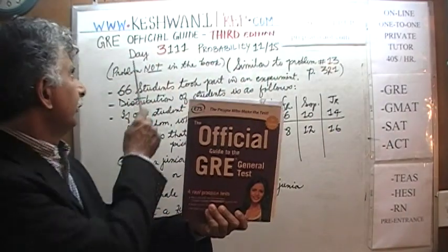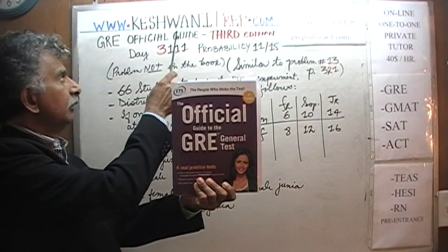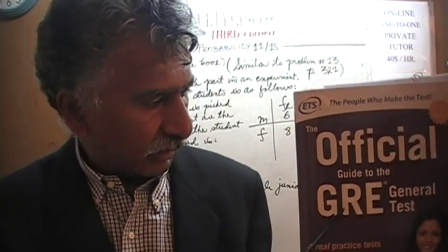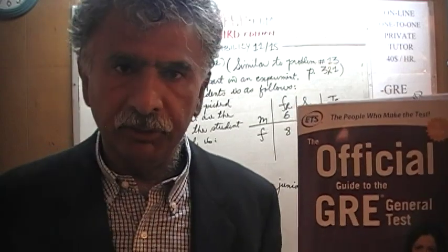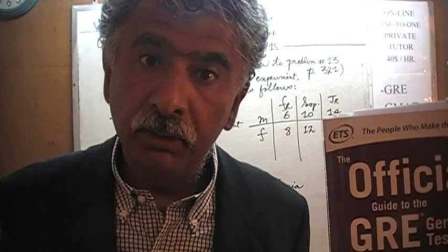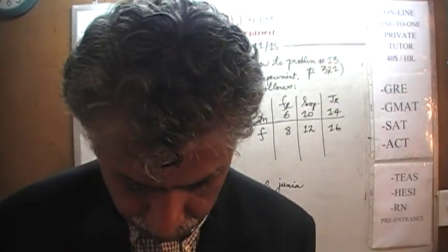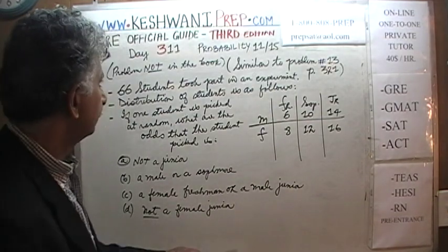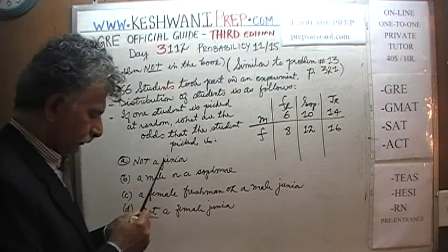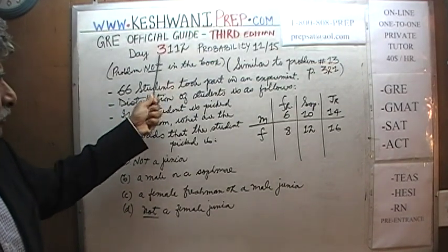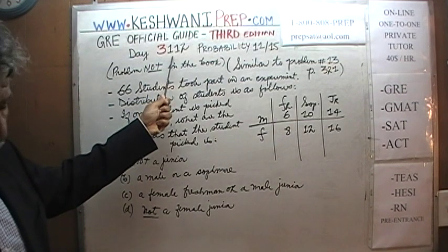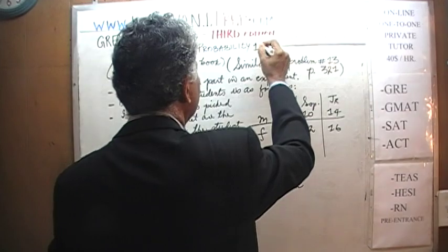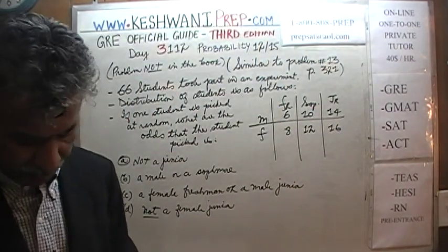Hello, my name is Keshwani — K-E-S-H-W-A-N-I. We are here to prepare for the GRE. We have been solving math problems out of the Official Guide to the GRE, Third Edition. Today is lesson number 112. We are on the topic of probability, and today is our twelfth lesson in the series of fifteen. After today, we will have three more before finishing this topic.